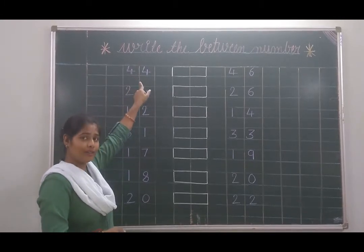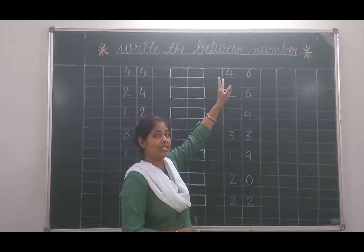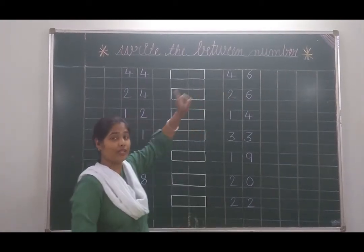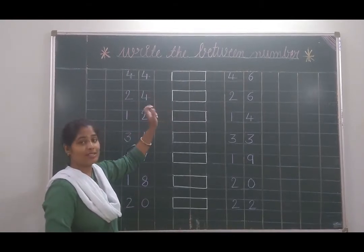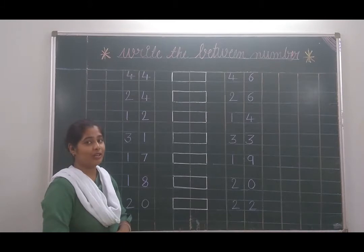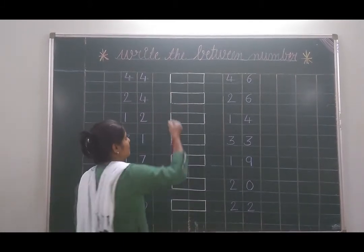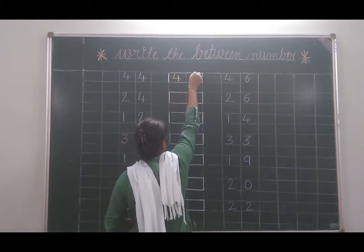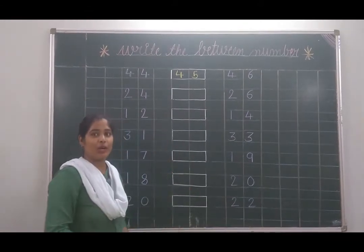First is 44 and 46. So is it right 44 after 46 are there? No. One number is missing in 44, 46 between one number is missing. Which number is that? 45. 44, 45 and 46. Now it's perfect.